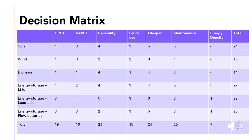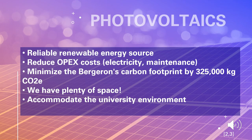We used a decision matrix to evaluate different renewable energy technologies and decided the ones we would move forward with are solar energy with lithium-ion battery energy storage due to their overall high scores. If we need more electricity, we would consider other options such as biomass and wind.